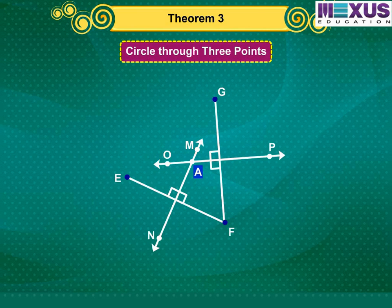Now, A lies on the perpendicular bisector MN of EF. We can see AE is equal to AF, as every point on the perpendicular bisector of a line segment is equidistant from its endpoints. Similarly, as A lies on the perpendicular bisector OP of FG, we get AF is equal to AG. Hence, AE is equal to AF, which is equal to AG, which means that the points E, F and G are at equal distances from the point A.